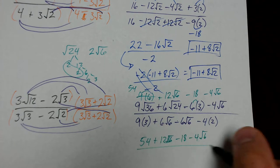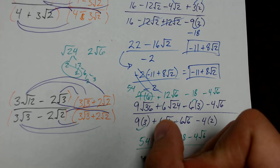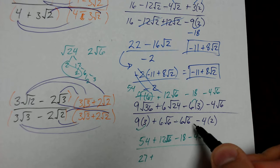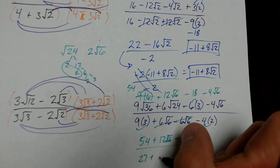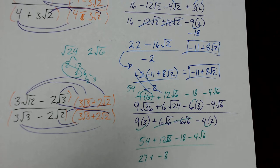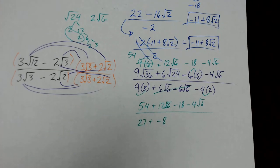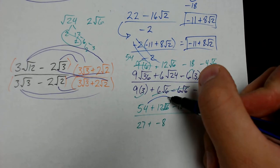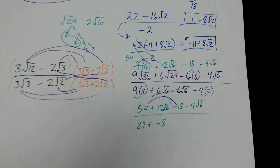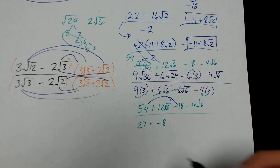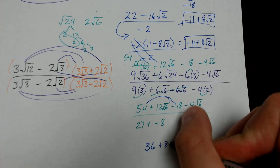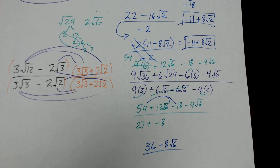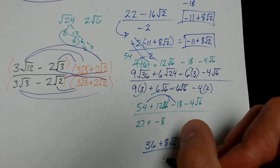Now let's simplify the denominator: 9 times 3 becomes 27. 6 root 6 and negative 6 root 6 cancel. 4 times 2 gives me negative 8. So the denominator is 27 minus 8, which is 19. Combining like terms in the numerator: 54 minus 18 is 36, and 12 root 6 minus 4 root 6 is 8 root 6. So the numerator is 36 plus 8 root 6, and the denominator is 19.